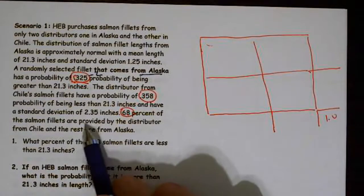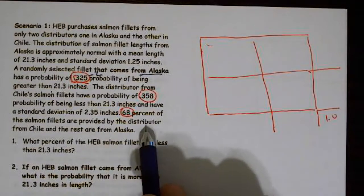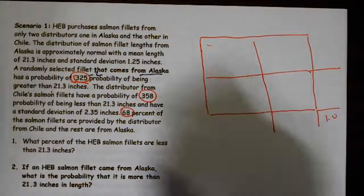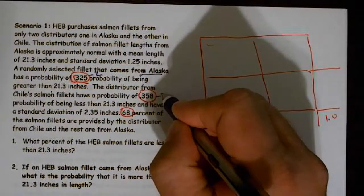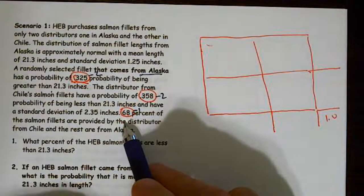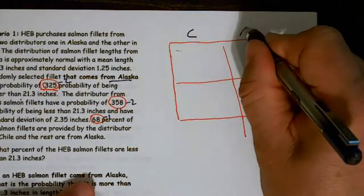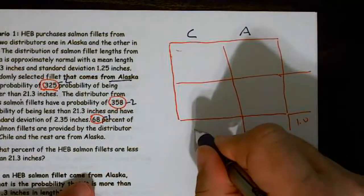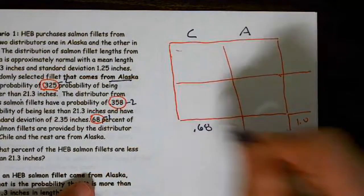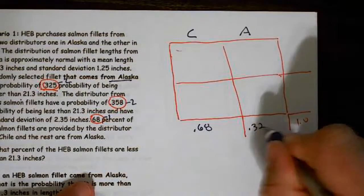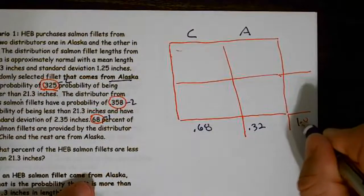68% of the salmon fillets are provided by the distributor from Chile and the rest are from Alaska. So in this case, the 68% looks like it's predicated on only one variable, and that is the location. Turns out this is from Chile. So basically, we have two locations — Chile and Alaska — and the chances from Chile is 0.68. The chances from Alaska is 1 minus 0.68, or 0.32.